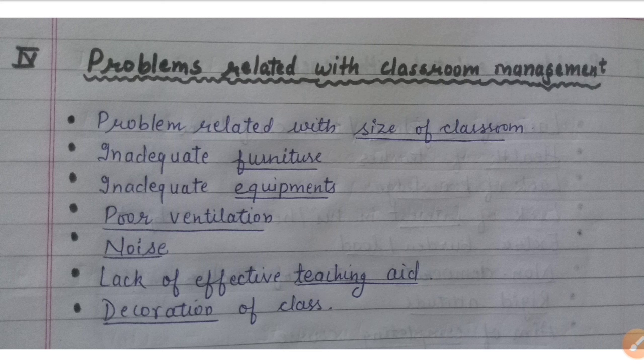The next point is lack of effective teaching aids such as charts, models, maps, and pictures. If teaching aids are not available, children cannot learn effectively, because teaching aids help retain knowledge for a long time. The next point is decoration of class — we can see that good classroom decoration with informative charts helps learning. If there is no decoration in the classroom, it is not a good environment for learning. So this is also an issue.